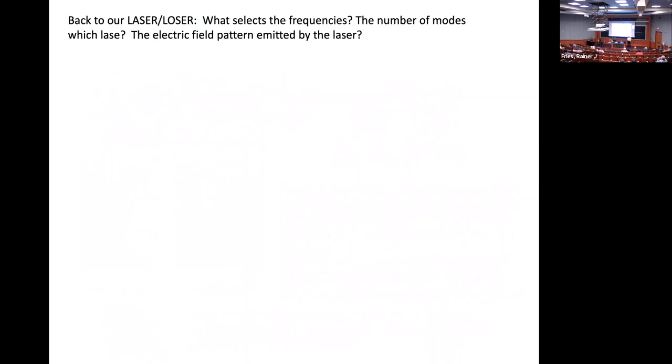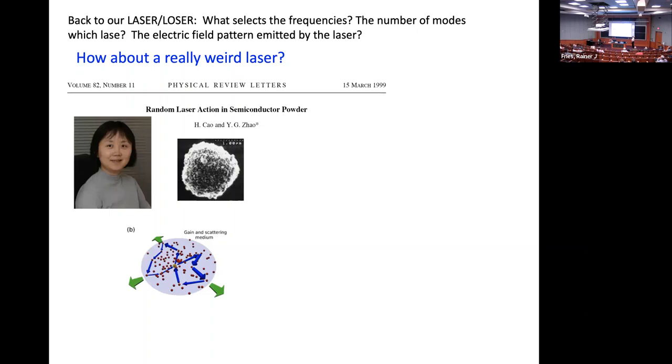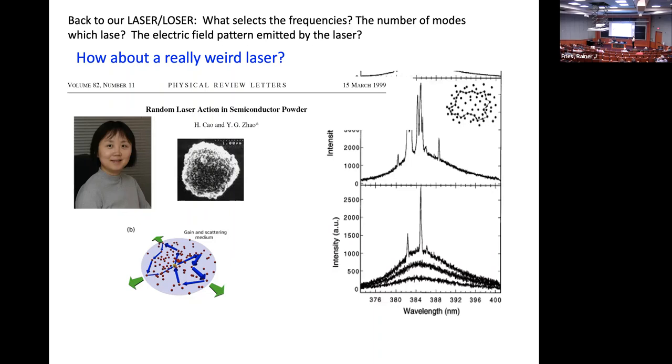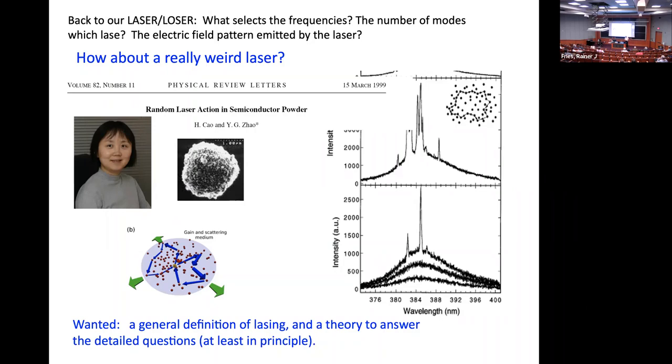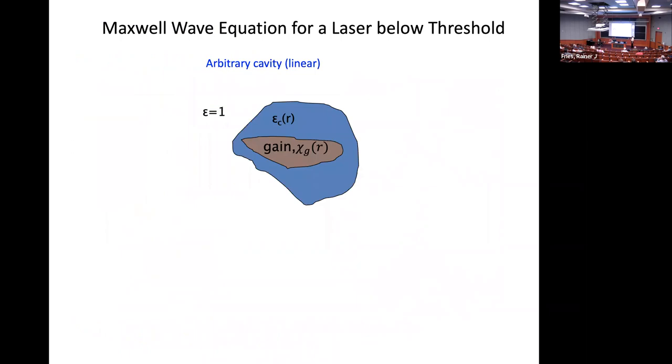Back to our laser. What selects the frequency? The number of modes, the frequencies you get out, the electric field pattern emitted by the laser? How about a really weird laser? This was discovered by my colleague Louis Sal. It's just a bunch of little nanoparticles of zinc oxide which you pump so that there's gain, there's inversion. So any light that gets emitted does bounce around, but there's no edge. It just flies out. People didn't really think something like this would emit sharp laser radiation, but it does. Here's some data.